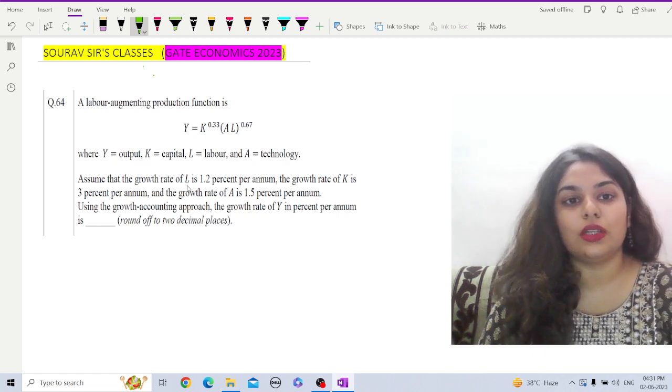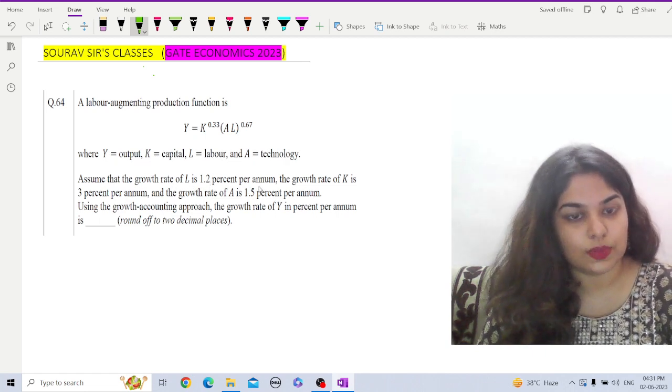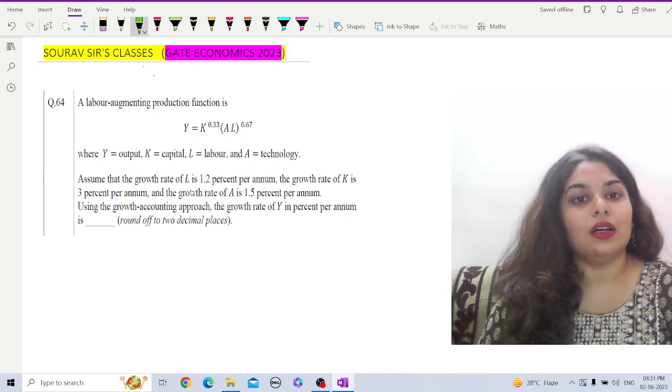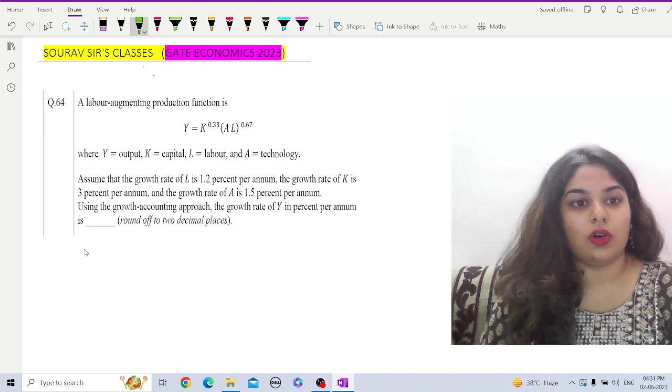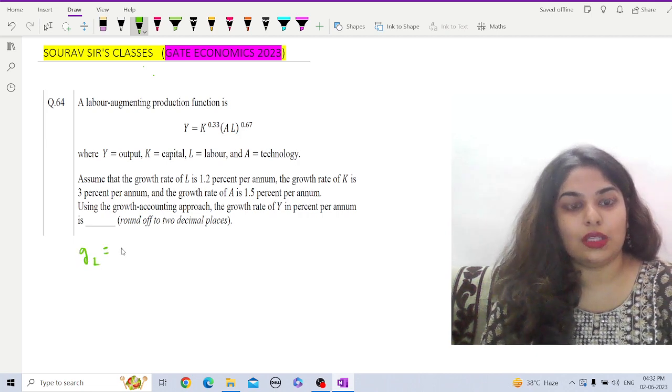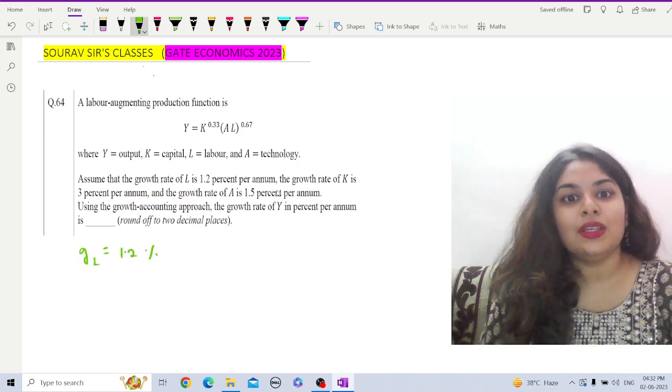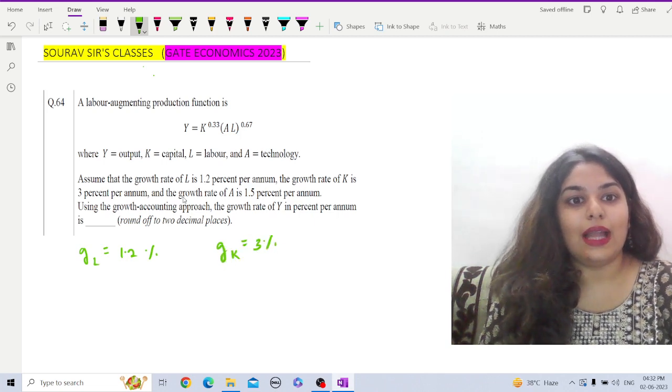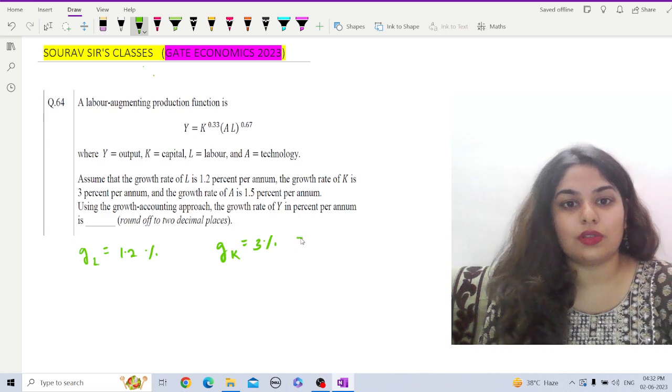The information given here is: assume that the growth rate of L is 1.2% per annum. So as we read, we will write down the given information. Growth rate of labor gL = 1.2%, growth rate of capital gK = 3%, and growth rate of technology gA = 1.5%.